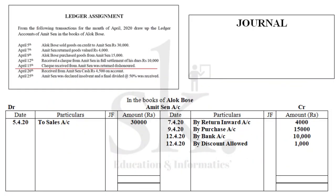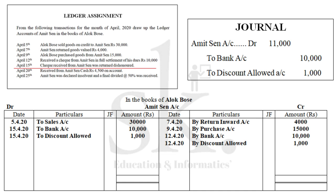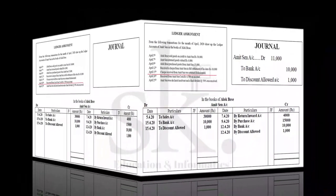On 15th April, the check received from Amit Sen was returned dishonored — meaning the check bounced, possibly due to wrong signature or insufficient funds. Since the check is dishonored, we must reverse the previous entry. Previously we passed bank account debit and discount allowed account debit to Amit Sen. Since it got dishonored, we reverse: bank and discount allowed are credited and Amit Sen account is debited. So on the debit side on 15th April, bank Rs 10,000 and discount allowed Rs 1,000 are recorded.